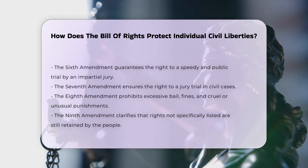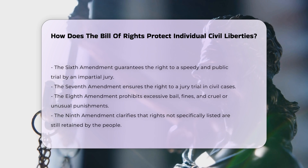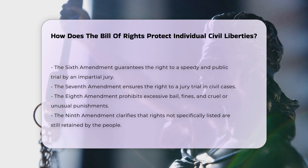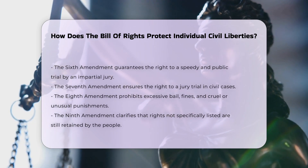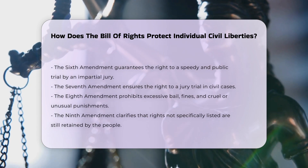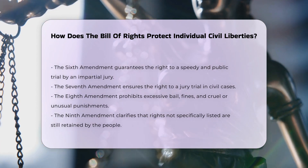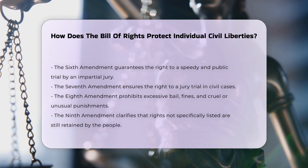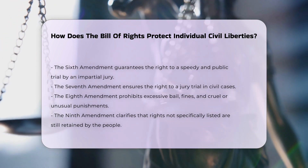The Seventh Amendment preserves the right to a jury trial in civil cases, preventing courts from overturning jury findings of fact. The Eighth Amendment prohibits excessive bail, excessive fines, and cruel and unusual punishments.